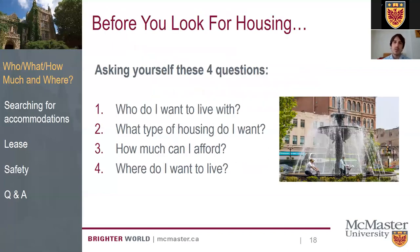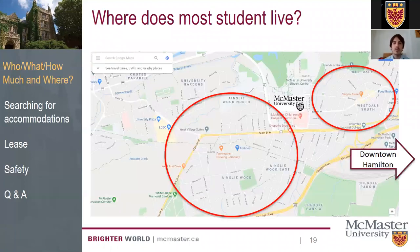The final question to ask yourself is: where do I want to live? Most students live close to campus — it's convenient, and you'll be near friends. In student areas there are restaurants catering to students, grocery stores, and most things you'd need. The areas close to McMaster are called Westdale and Ainsleywood, and those would be the two areas to keep in mind when searching for housing.